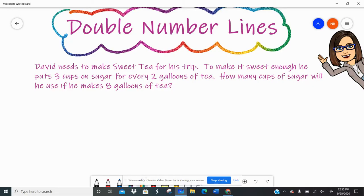It says David needs to make sweet tea for his trip. To make it sweet enough, he puts three cups of sugar for every two gallons of tea. How many cups of sugar will he use if he makes eight gallons of tea? So if I circle or highlight these important details, I can take that original ratio of two gallons to three cups or three cups to two gallons and figure out how many cups I would need for that eight gallons.